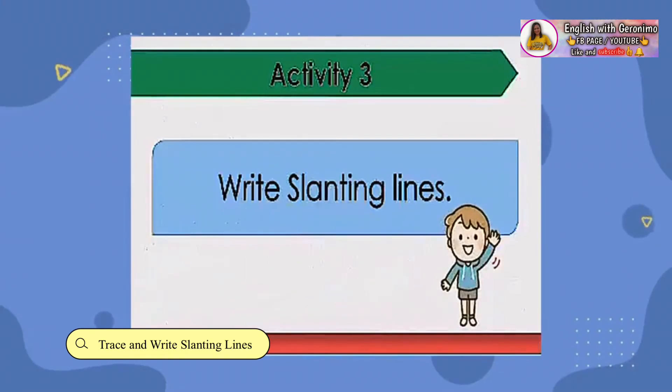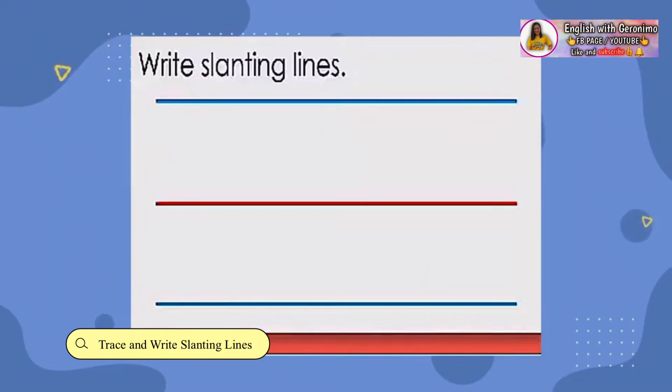And for our last activity, let's write slanting lines. Let's start from the blue line down to the blue line. Top to bottom in a left-diagonal way.